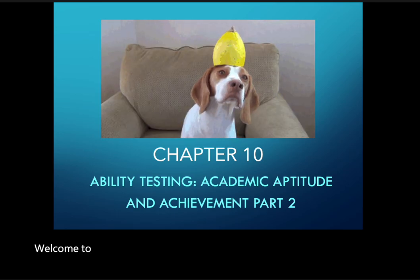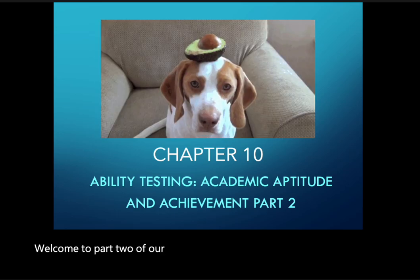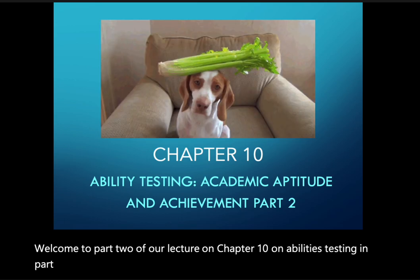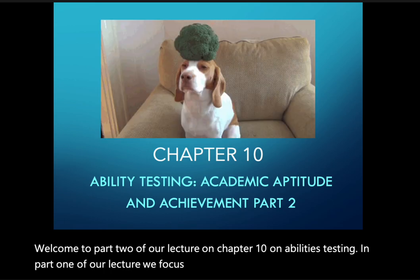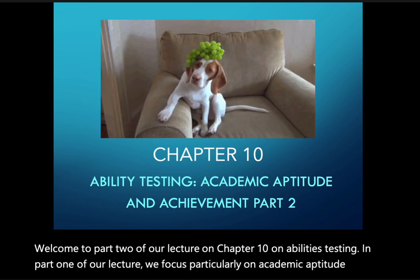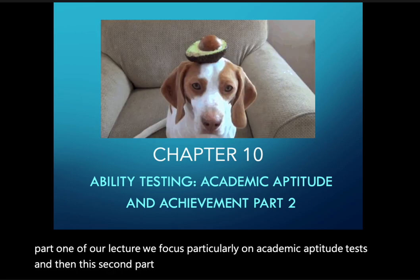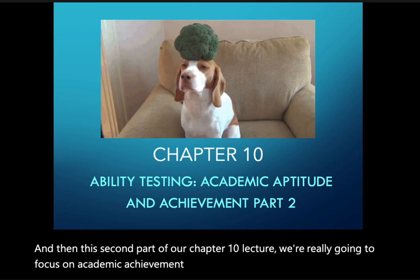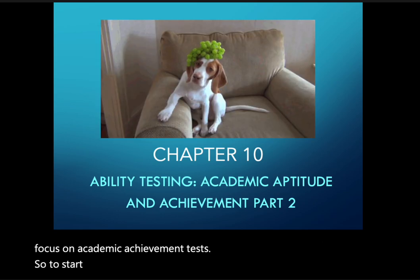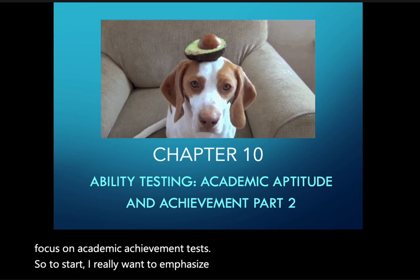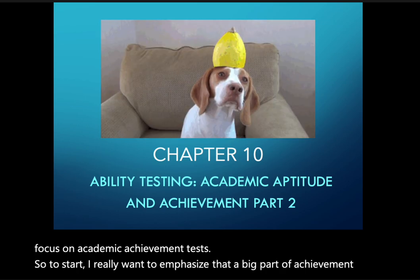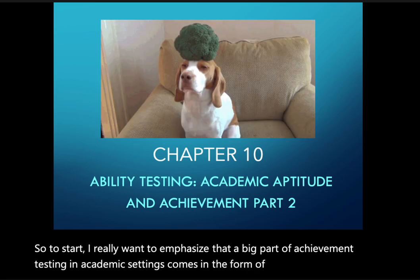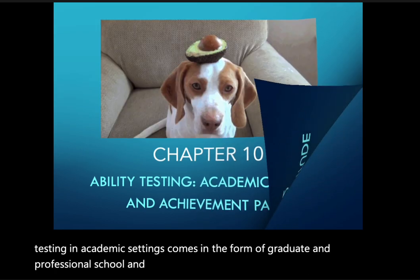Welcome to part two of our lecture on chapter 10 on abilities testing. In part one we focused particularly on academic aptitude tests, and in this second part of our chapter 10 lecture we're really going to focus on academic achievement tests. A big part of achievement testing in academic settings comes in the form of graduate and professional school admissions tests.